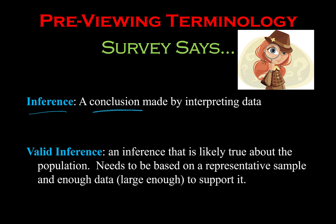We can have a valid inference — meaning drawing a valid conclusion — when we have a large enough sample that is representative of the population, meaning it's unbiased and large enough to represent the entire group. So when you're looking at data in real life or being presented data in the news or on the internet, you have to ask yourself: is the inference or conclusion they're drawing a valid inference based on how they collected the data?